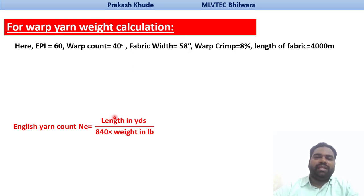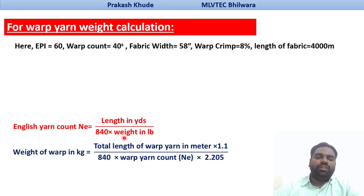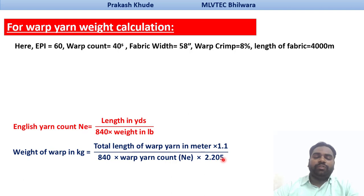So that can be written mathematically as: English count = length in yards / (840 × weight in pounds). Now we need to calculate the weight of yarns in kg form. The weight of warp in kg is equal to the length in yards multiplied by 1.1 to convert meters to yards, divided by 840 into yarn count, and multiplied by 2.205 to convert weight from pounds to kg.